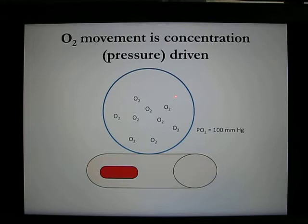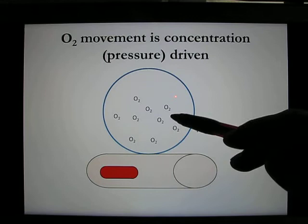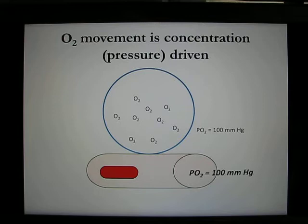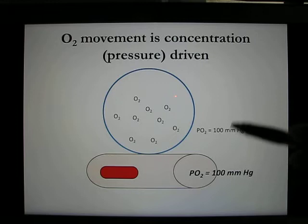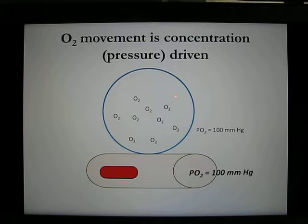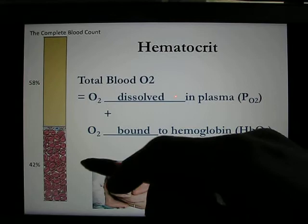Oxygen goes to your alveoli, and the PO2 in your alveoli is 100 mmHg. It turns out the PO2 in your blood is also 100 mmHg — the pressures match. But how much oxygen can really be delivered by your blood? It depends on the solubility of this molecule and on your red blood cells. We can actually test how much red blood cell you have in your blood — we can do the hematocrit.